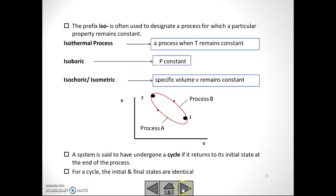The prefix iso is often used to designate a process for which a particular property remains constant. For example, isothermal process is when T remains constant, or thermal equilibrium. Isobaric: P is constant throughout the process. Isochoric: specific volume remains constant.